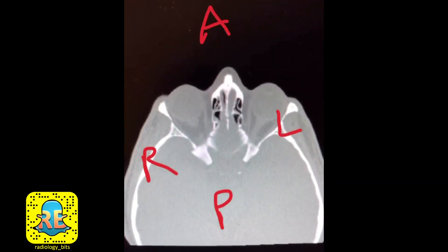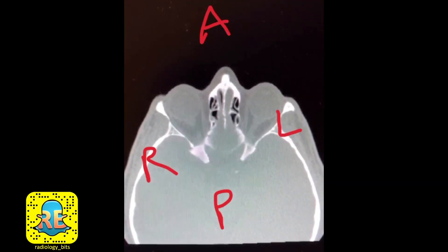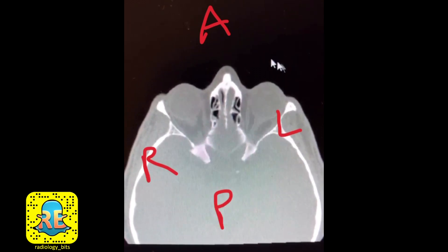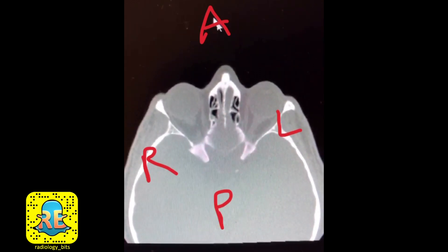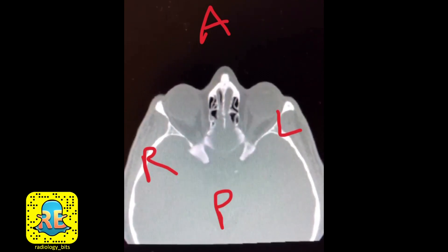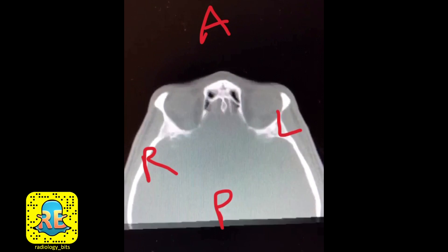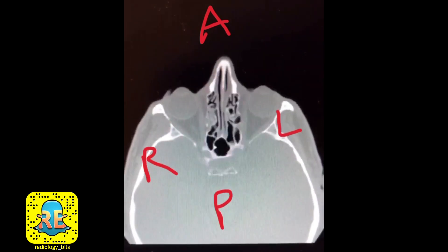We're looking at an axial image of the paranasal sinuses. You have anterior here, posterior here, right on this side and left on this side. For students, you're looking at the patient from the feet, and we're going to scroll from above downward.